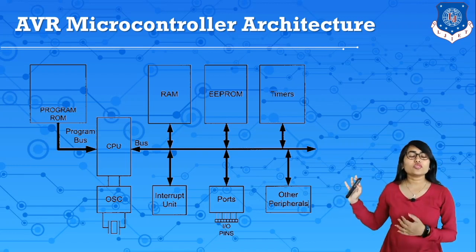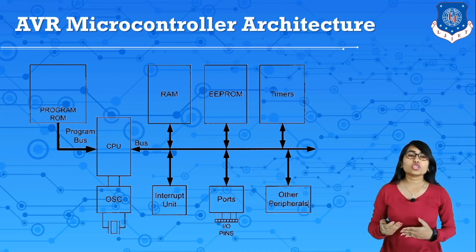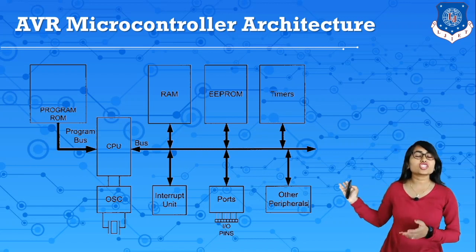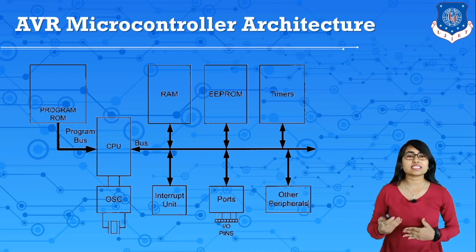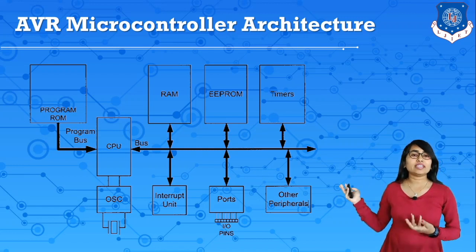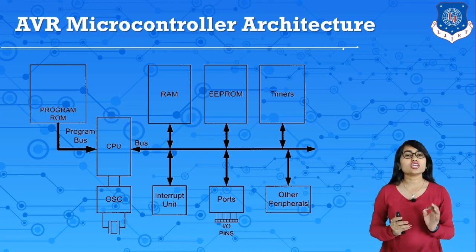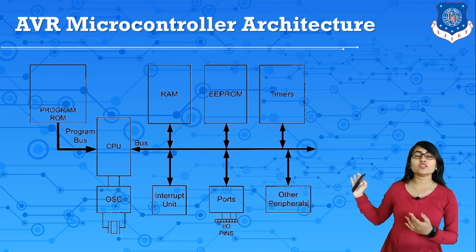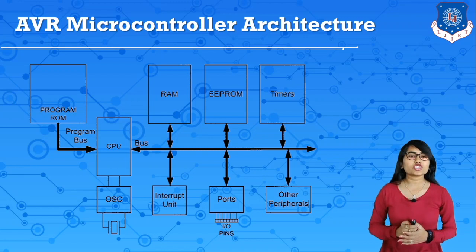If we want to interface with other functional units, we have a bus — that means a group of wires. Using this group of wires we can interface any of the functional units. Here we have varieties of bus: address bus, data bus, and control bus. The address bus is to send addresses, the data bus is for data, and the control bus is to control the functional units. So let's discuss all the functional units one by one.